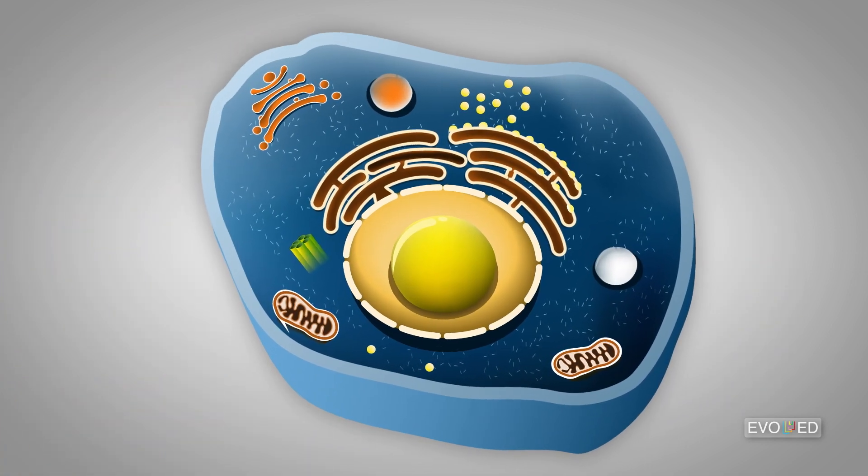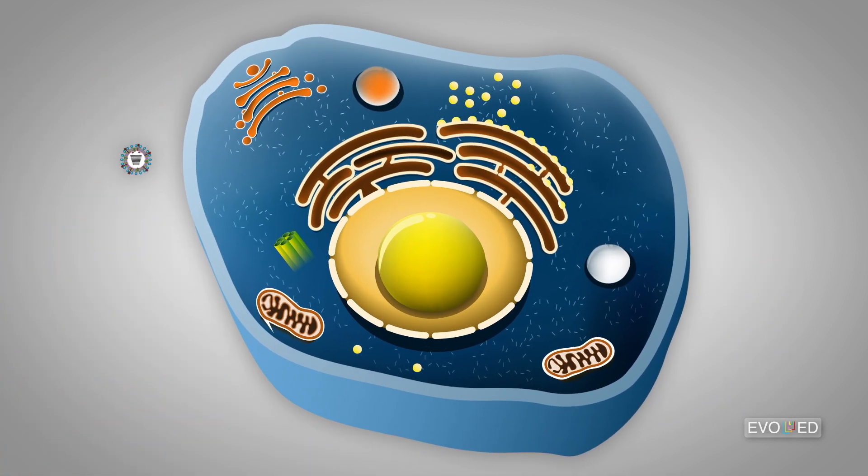Alright, here we go. A virus particle approaches a cell. It gets engulfed by the cell and releases its viral RNA, in this example, into the cell.